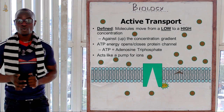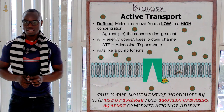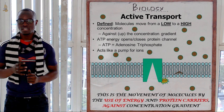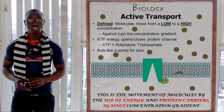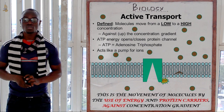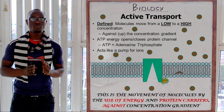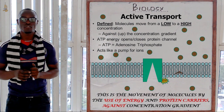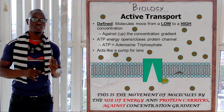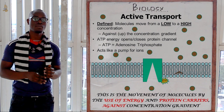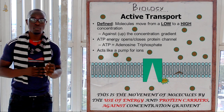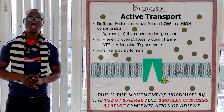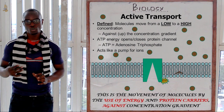Let's define what active transport is. Active transport is the movement of substances across the membrane against the concentration gradient. So the particles must move against the concentration gradient — if they would normally move from low to high, active transport moves them from high to low; if they would move from high to low, active transport moves them from low to high.